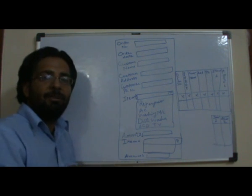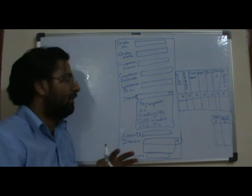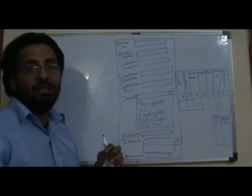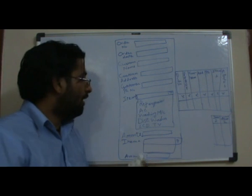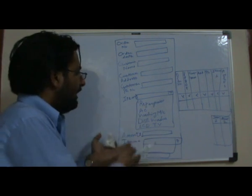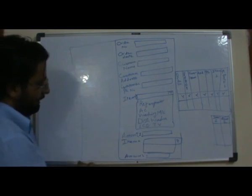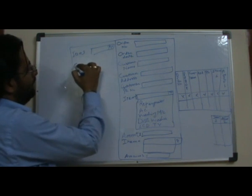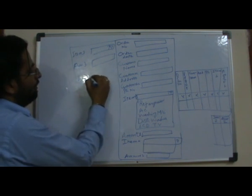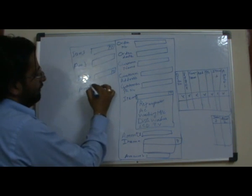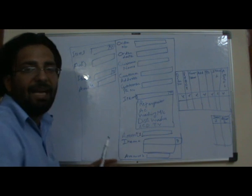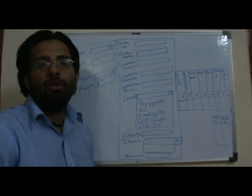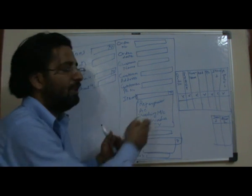Then one day a newly married couple walked in wanting a lot more than two items — a refrigerator, an AC, a washing machine, a dishwasher, and an LCD TV. I was confused about how many orders to create, and I couldn't keep calling EFCord every time to add item three with amount three, item four with amount four, and so on. He would be really angry, and the real problem is I can never know in advance how many items a customer will order.